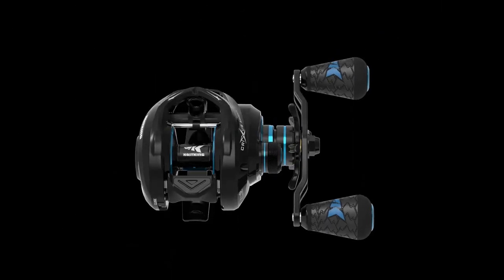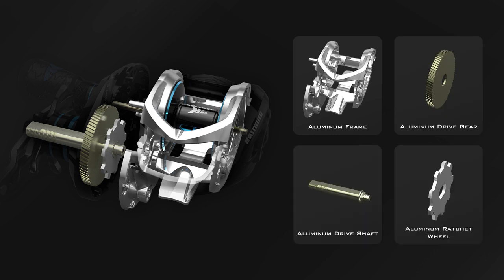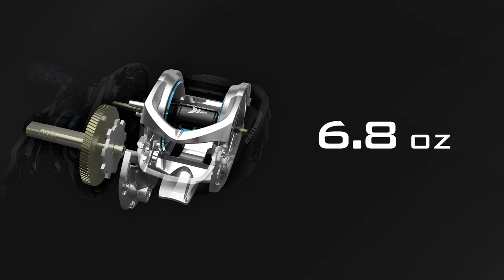Here's a Crixus Armor X bait casting reel made from all aluminum alloy frame, drive gear, main shaft, and ratchet wheel, but only weighs 6.8 ounces.